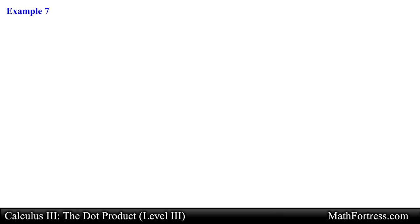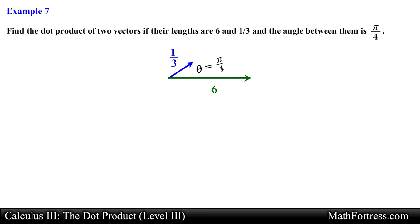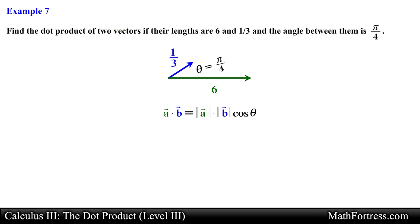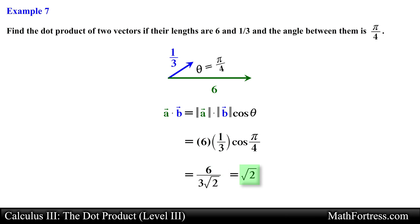Alright, let's try a different type of problem. Find the dot product of two vectors if their lengths are 6 and 1/3 and the angle between them is pi over 4. We are given the magnitudes of two vectors and the angle between them in radians, so we use the geometric definition of the dot product. Substituting the values, we simplify the expression and rationalize the denominator, obtaining the square root of 2 as the final answer.